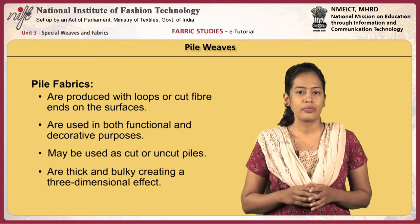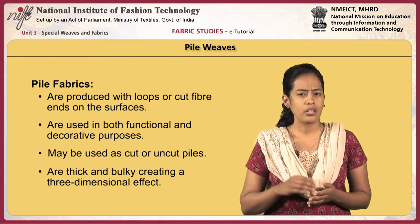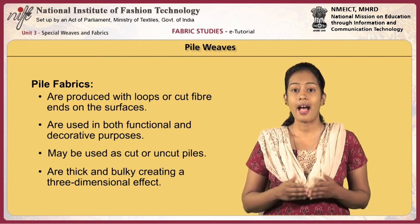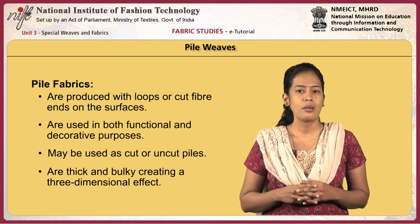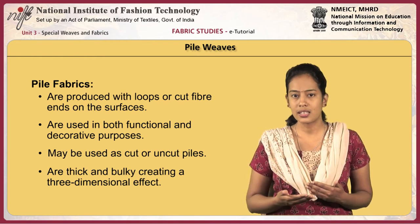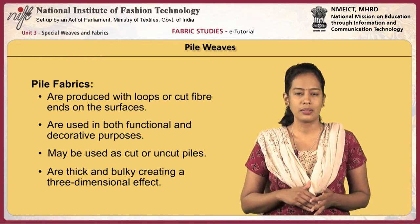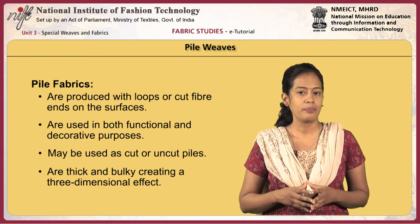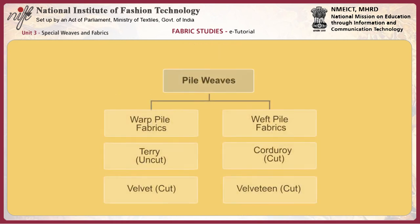Pile fabrics are produced with loops or cut fiber ends on the fabric surfaces. They are used in both functional and decorative purposes. Pile fabrics may be used as cut or uncut piles. They are thick and bulky, which creates a three-dimensional effect. Pile weaves are made by introducing an additional set of yarns either in the warp or in the weft direction. Hence, they are called warp pile fabrics and weft pile fabrics respectively.